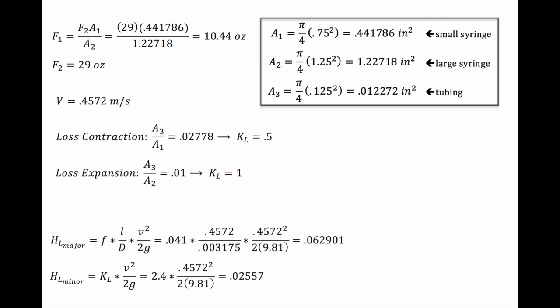Pascal's equation tells us that we should have been able to lift 29 ounces with 10.44 ounces. However, that calculation is based on a perfect system.